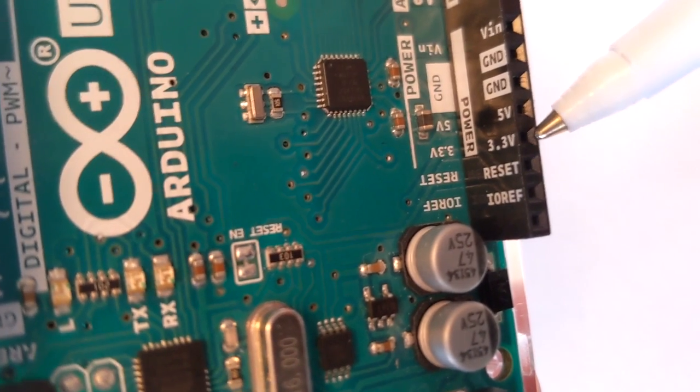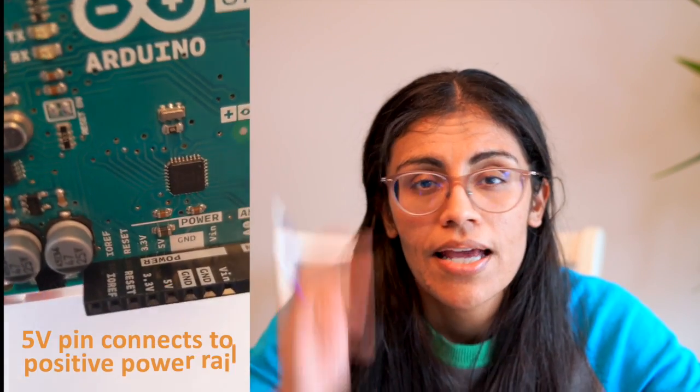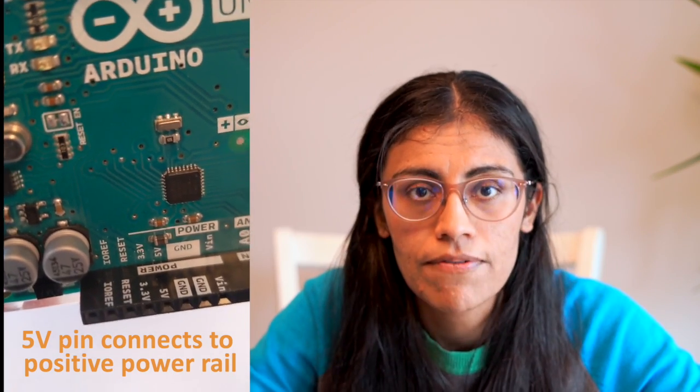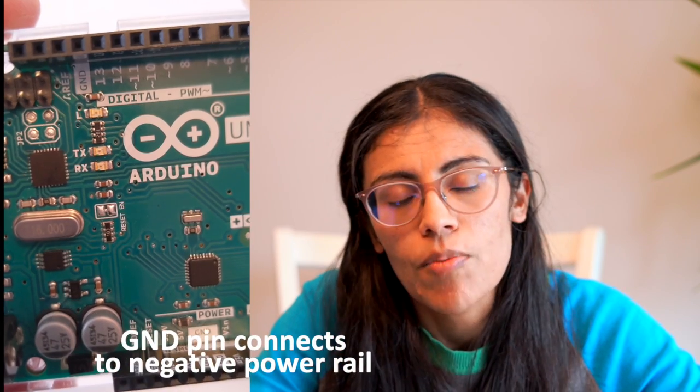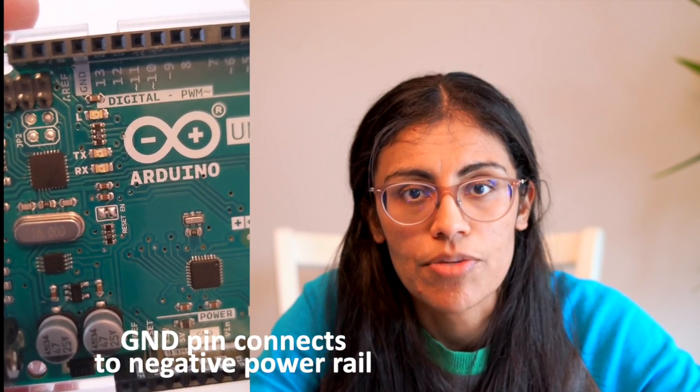So five volts or 3.3 volts, both will be able to provide power to the positive power rail on our breadboard. Check out our last video if you're not familiar with the breadboard. So our five volt pin, we can view that kind of like the positive terminal of our battery. And then we have three pins on our board labeled GND, which stands for ground. So we can imagine the ground pins all acting like the negative terminal of our battery.